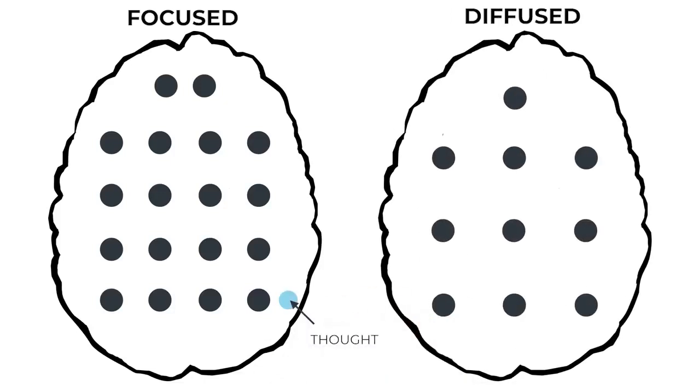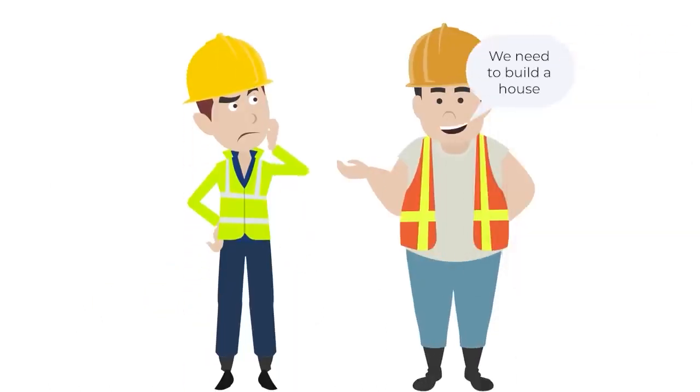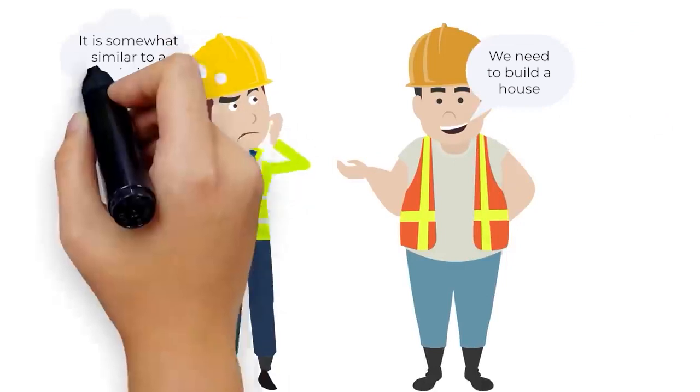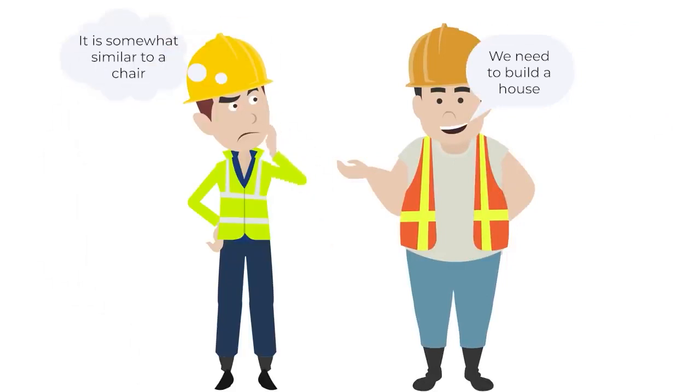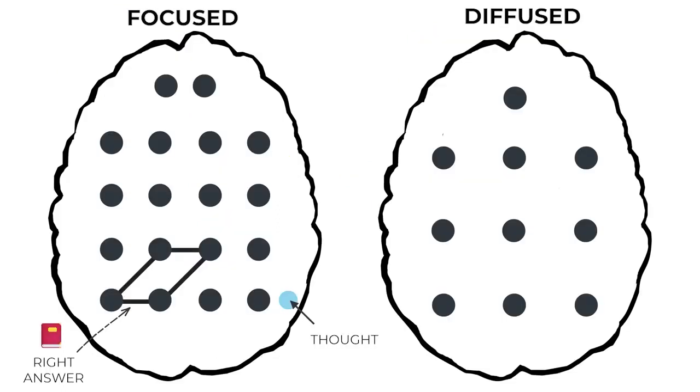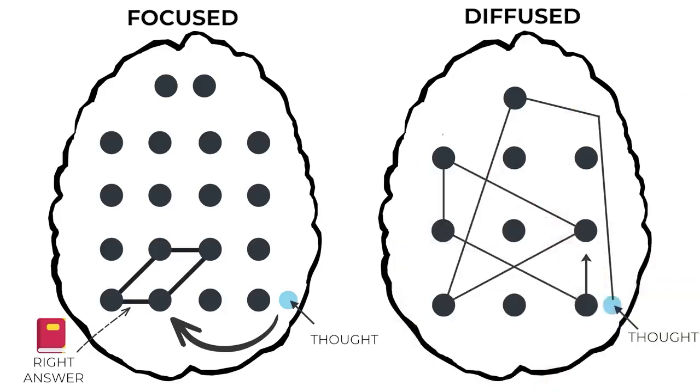In the first case, we will look for a solution to the problem from what we already know. And it's not certain that it will lead to a correct answer. For example, when multiplying numbers, it'll only help us if we know the multiplication table. But imagine that we are given a task that we encounter for the first time. We will also begin to look for the answer to it in familiar ways, that is, by comparing this problem with those it is similar to. And so we may not be able to find the answer, because neural connections can be located in different parts of the brain. If we read a textbook before making a decision, we'll clearly understand in which part of the brain we should look for the answer. But diffused thinking allows you to look at the world much more broadly without getting hung up on one area.